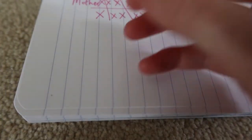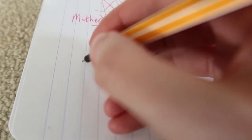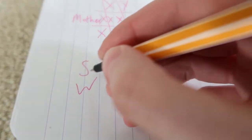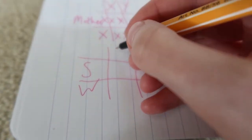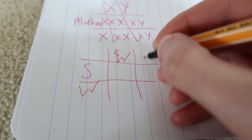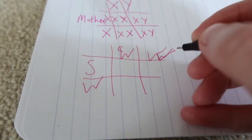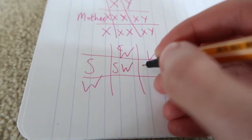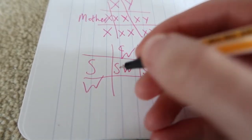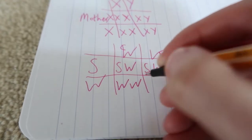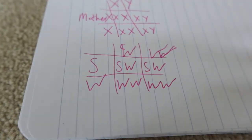The opposite is the ZW system. With ZW crossed with WW, you can see how the inheritance is working. You still get that 50% chance of male or female. The ZW system is also found in birds and a few other things.